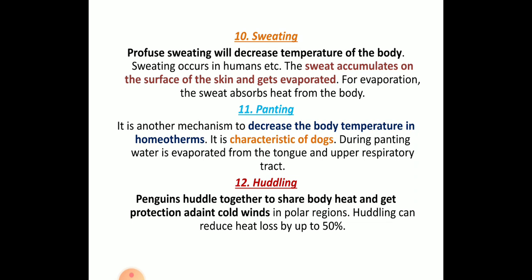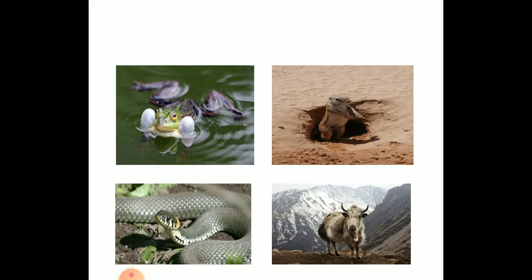Huddling is a major and very important type of thermoregulation in penguins. They come together and form a circle during high winter winds in the Antarctic region to overcome cold conditions. When they huddle, they can reduce their heat loss by up to 50%.